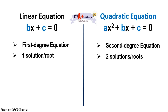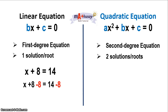In terms of solution or roots, a linear equation has 1 solution. Take this example: x plus 8 equals 14 is an example of a linear equation. We have to find x that will satisfy the equation. To solve for x, we add negative 8 to both sides of the equation, which gives us x equals 6. 6 is the only value that when substituted into x will give you 14.